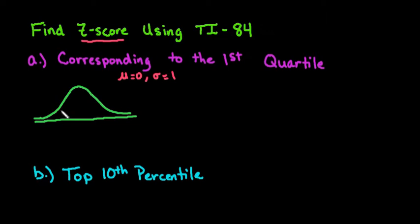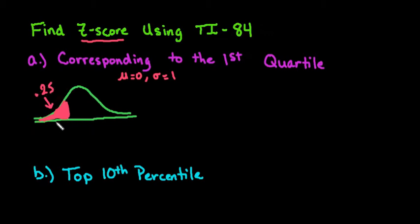We're looking for the first quartile, and the first quartile — if you remember what that means — it means 25% of the area is to the left of this value. So the first quartile means an area of 0.25 is going to be to the left. This is going to give us a negative z-score because it is below the mean.